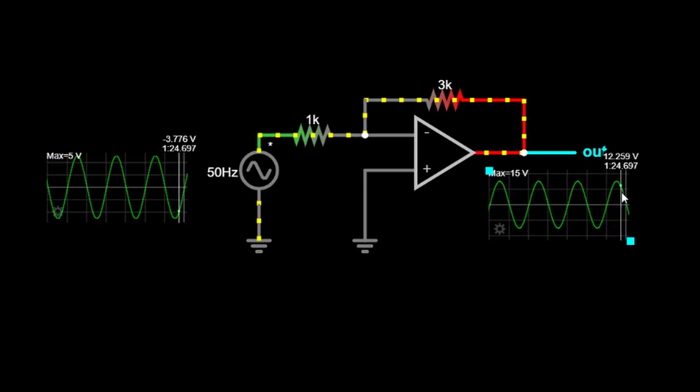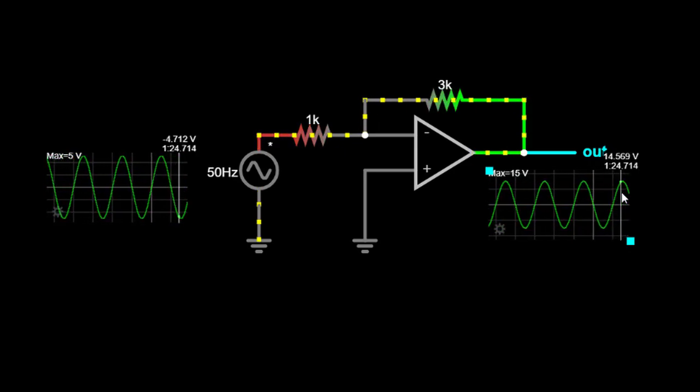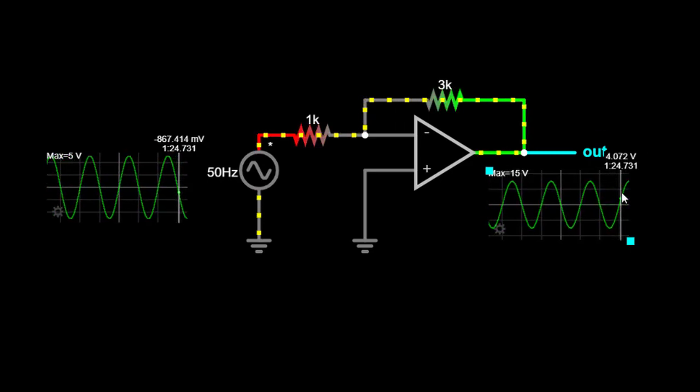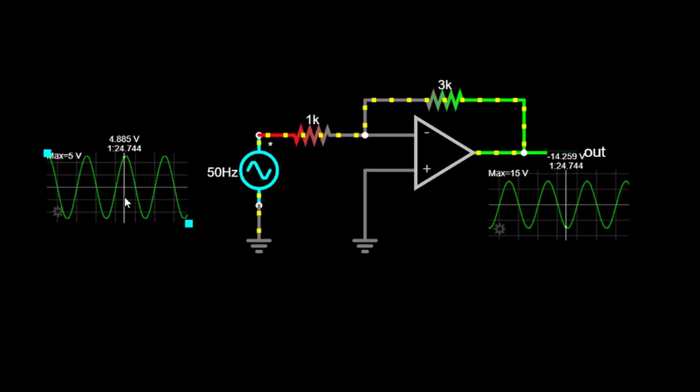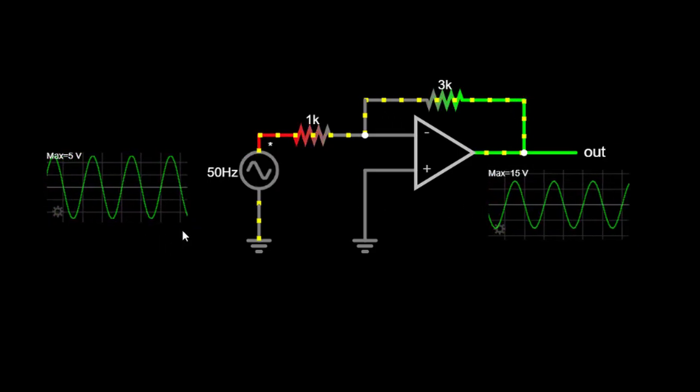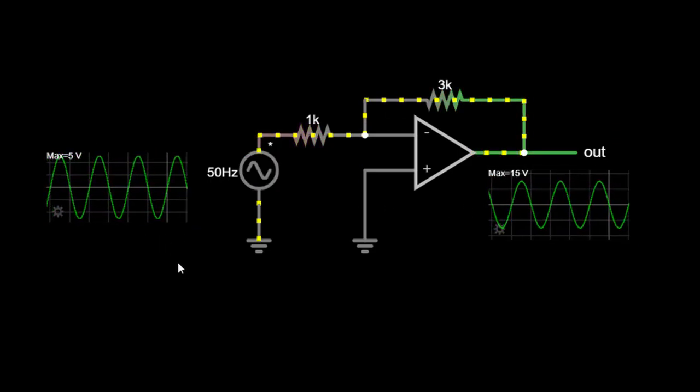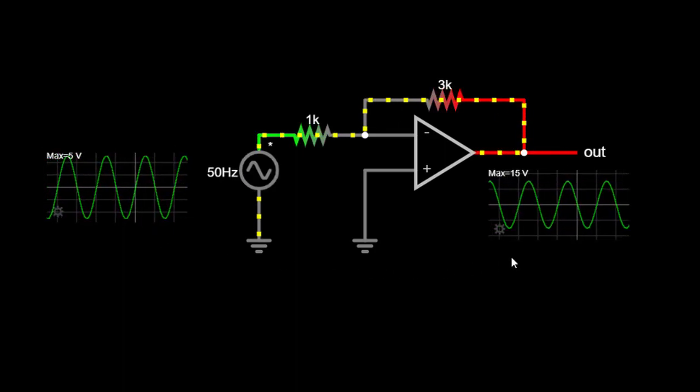For example, if we apply a positive voltage at the inverting input, the OPAMP will produce an output voltage that is the negative of the input voltage, but amplified based on the gain set by the resistors. Similarly, a negative input voltage will result in a positive, amplified output voltage.